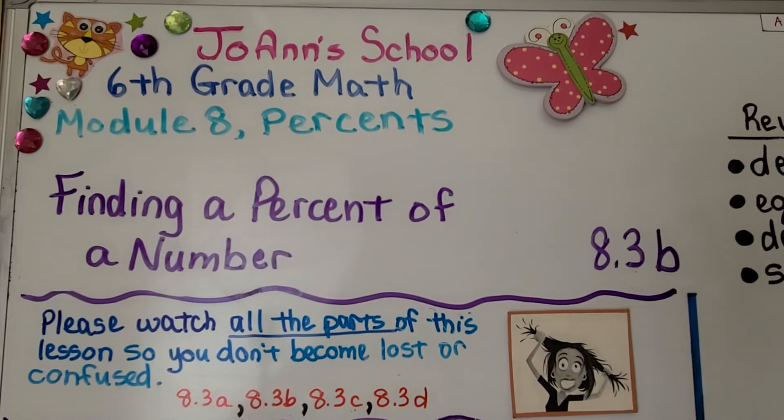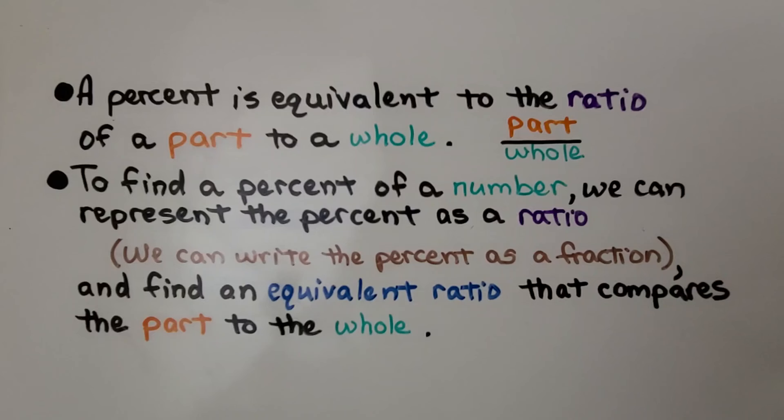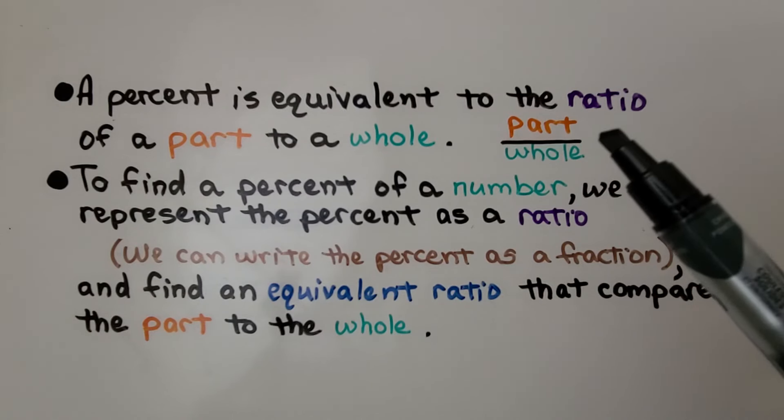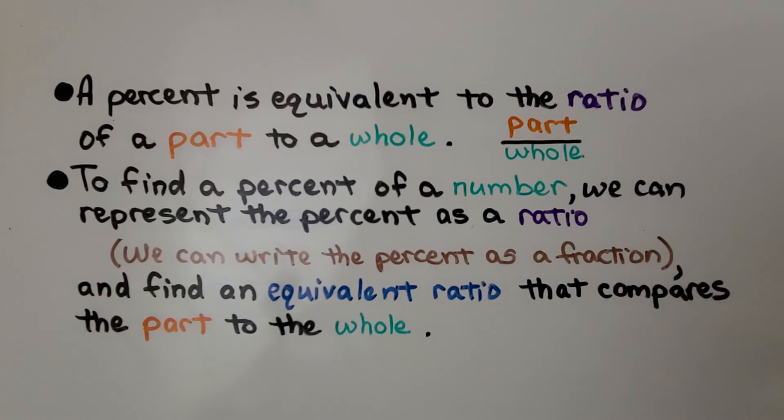Lesson 8.3b, Finding a Percent of a Number. We now know that a ratio can be written as a fraction, and a percent is equivalent to the ratio of a part to a whole. To find a percent of a number, we can represent the percent as a ratio. We can write the percent as a fraction and find an equivalent ratio that compares the part to the whole.